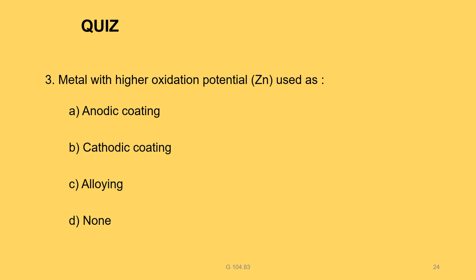Question: metal with higher oxidation potential — zinc — is used as anodic coating. Higher oxidation potential means lower reduction potential, so the metal is placed above in the electrochemical series and acts as an anode. Therefore zinc is used as anodic coating. Answer: A.